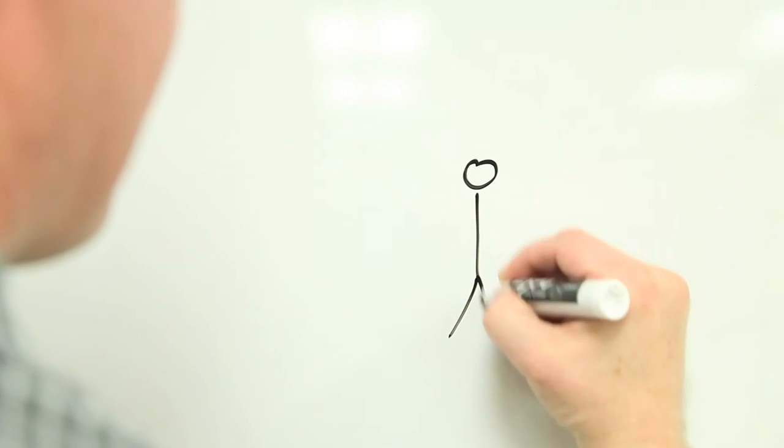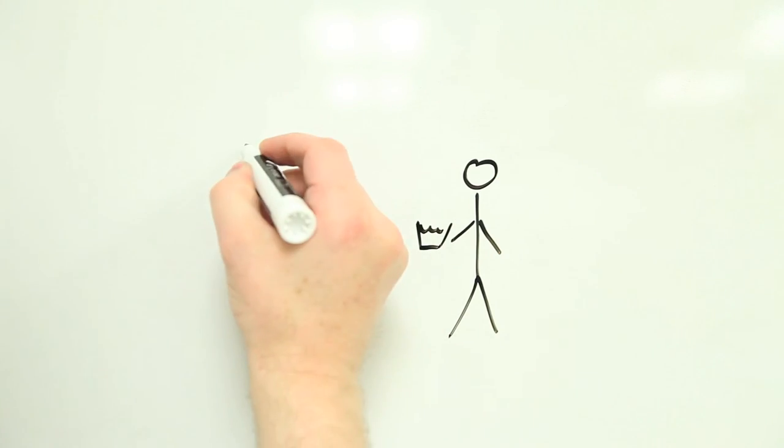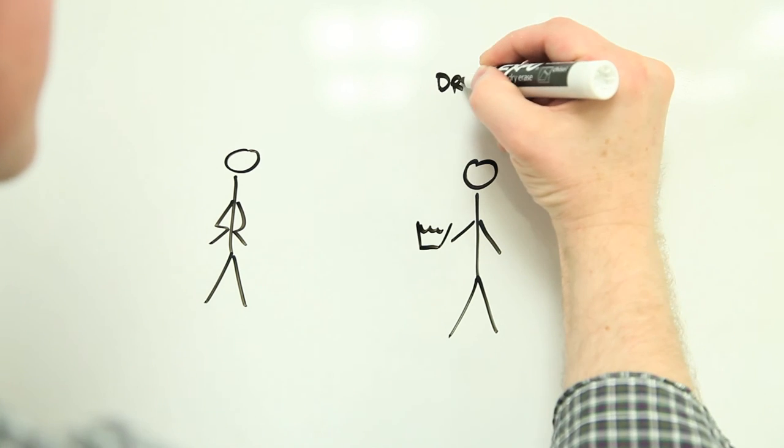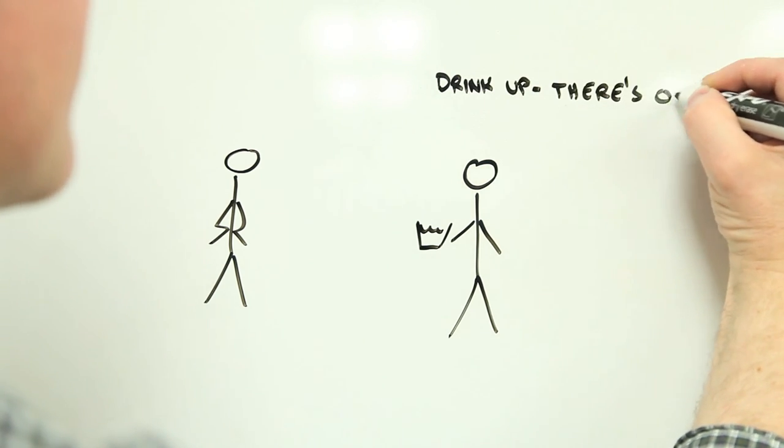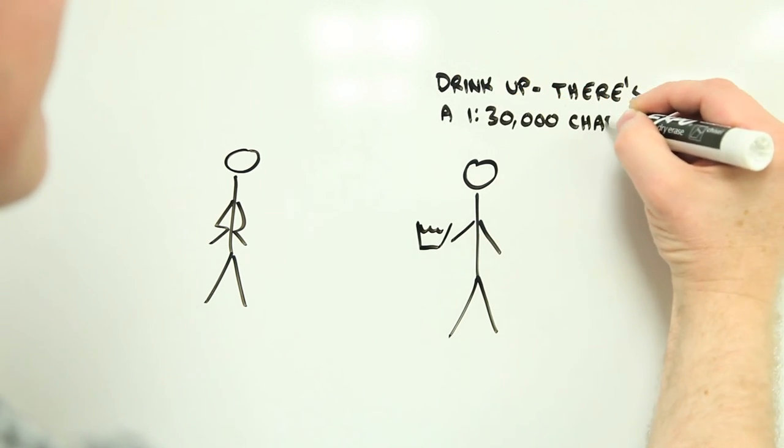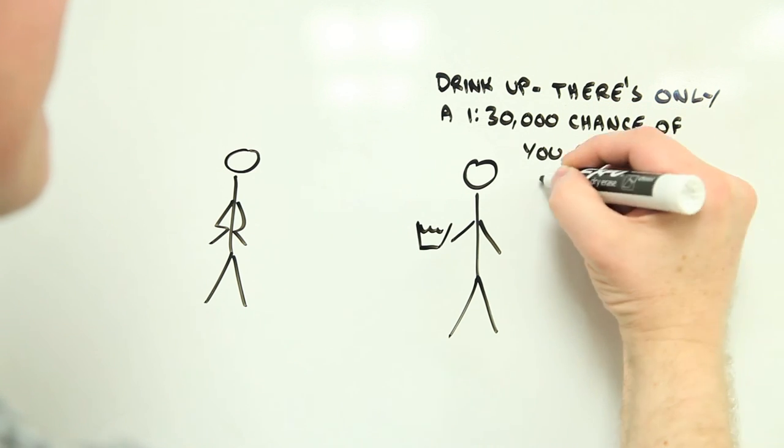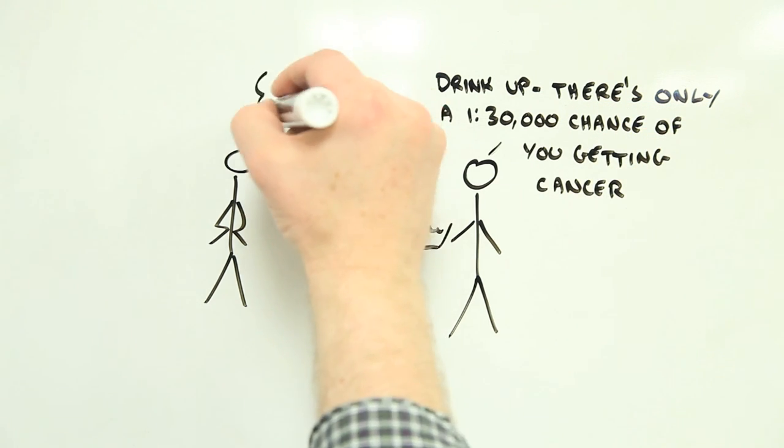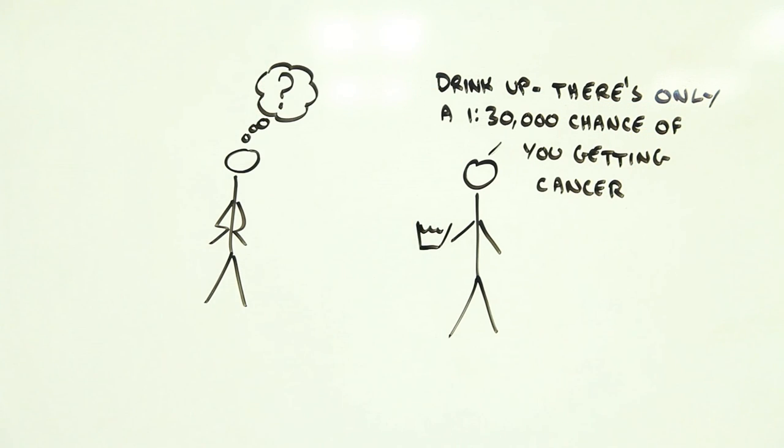However, just being able to put a number on the probability of something bad happening does raise some more challenging questions, including what you do with that number once you have it, and who decides how much risk is okay, especially if someone else created the risk in the first place. These, though, are questions for another Risk Bites and another day.